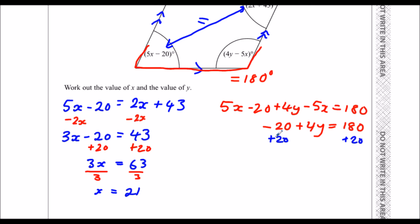That leaves me with 4y is equal to 200. So 4y's are 200. Divide both sides by 4. So y is 50.